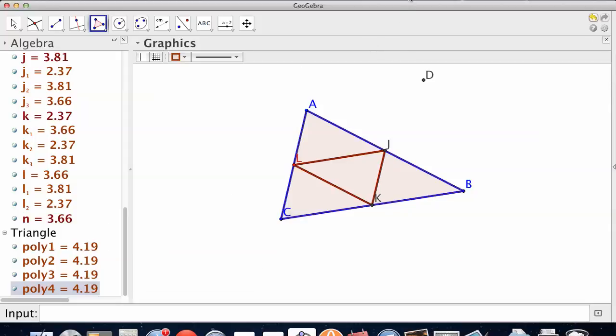So, that's midsegment. Interesting property. Parallel to the other side, half the other side. Four congruent triangles.